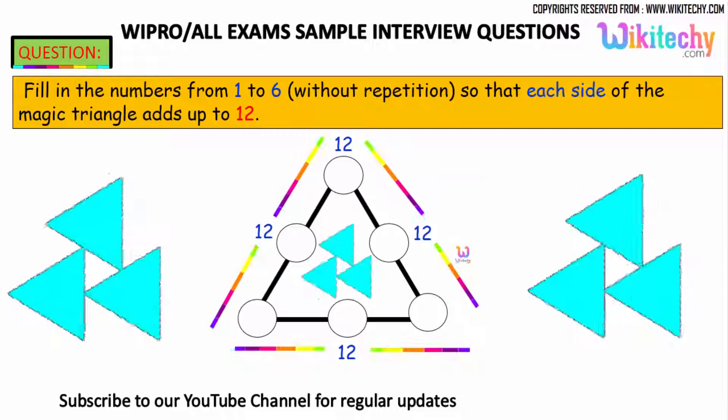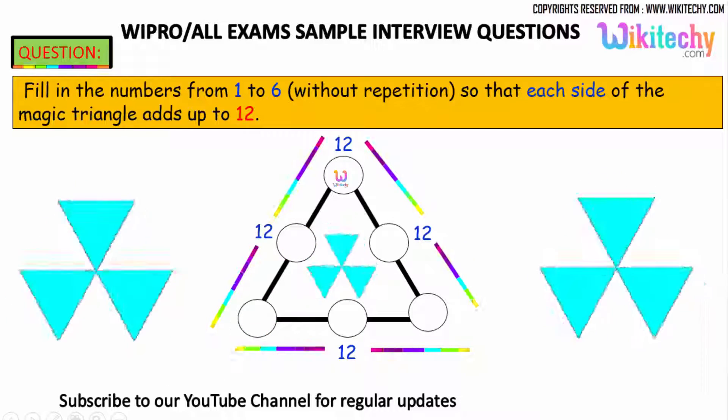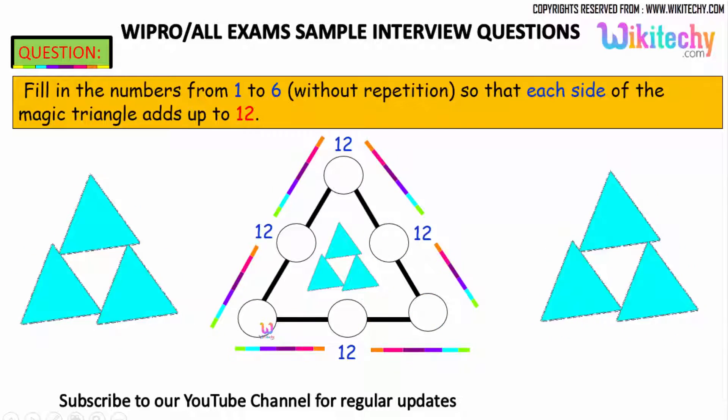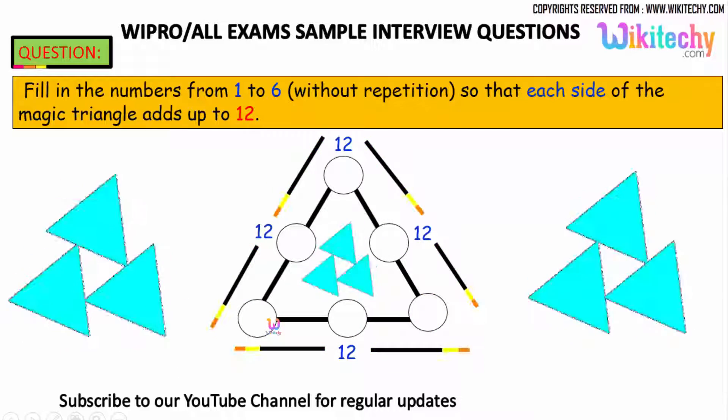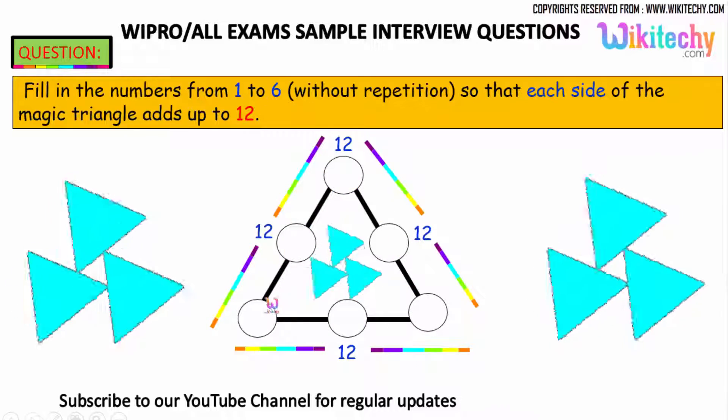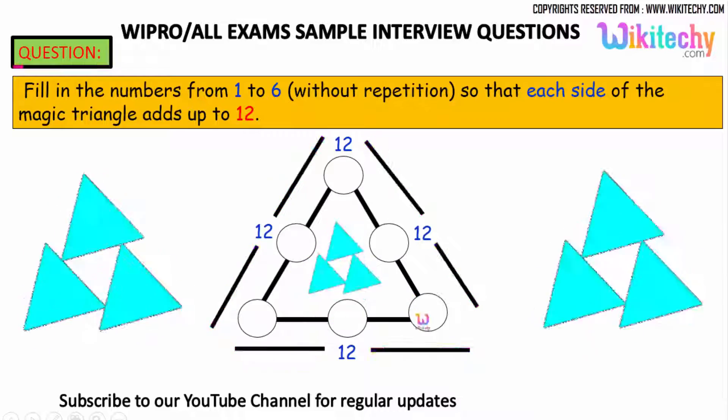You got one number here, plus 2 plus 3, you should get 12. 1 plus 2 plus 3 is 12. So we need the arrangements of 1 to 6 numbers so that we should have the adding up of 12.